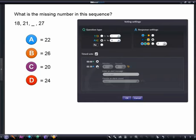Finally, we select if we wish to have a timed vote. Here, we can select the countdown option and give the pupils 30 seconds to answer, for example.